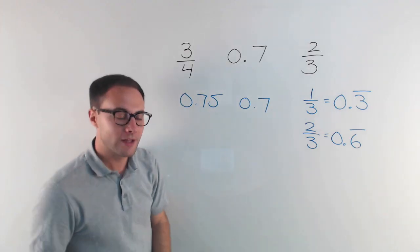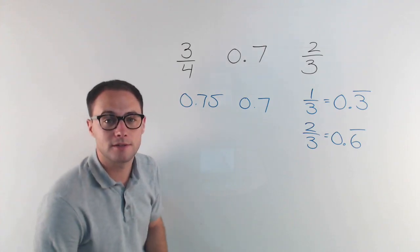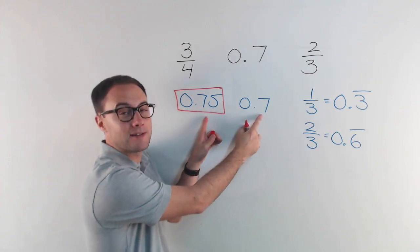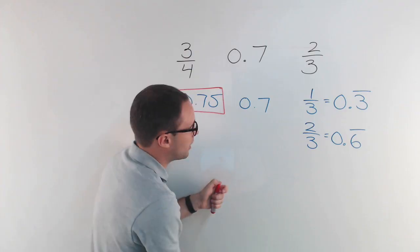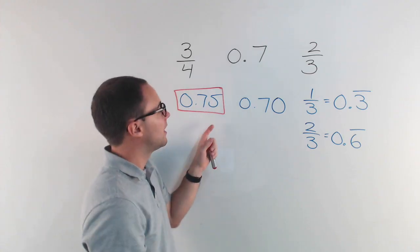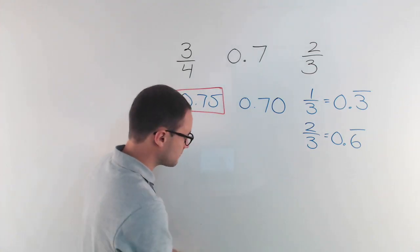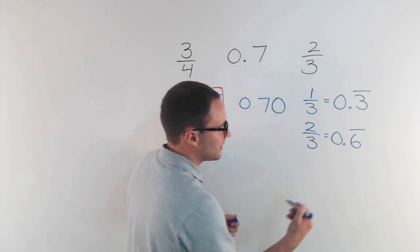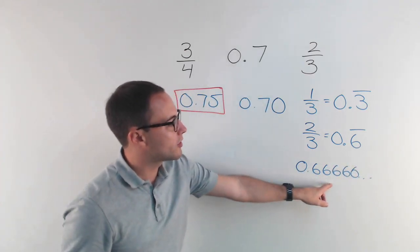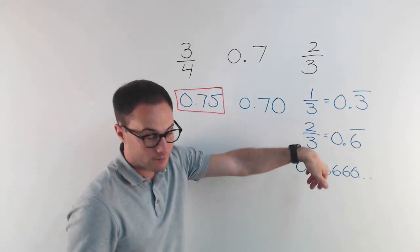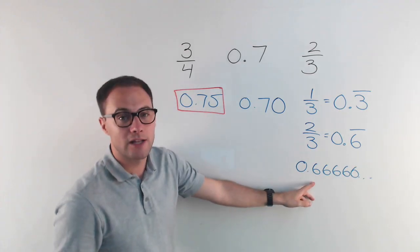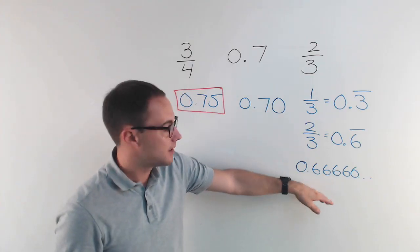Now that they're all decimals, it's pretty easy to see which one's greatest, and that is 0.75. These both have seven in the tenths place, but then we have to go to the next. I could add a zero there — so it's really 75 hundredths compared to 70 hundredths, and obviously that is greater. 0.6 repeating is like 0.66666 forever, but we're looking right off the bat at the tenths place — six is less than seven, so we already know that's actually the least.